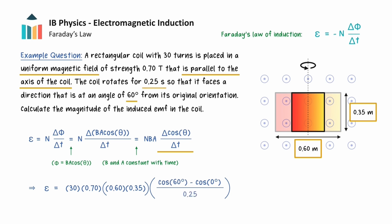So the final value of theta will be 60 degrees, and this happens in a time of 0.25 seconds. Since we are only interested in the magnitude, completing this calculation gives us a value of 8.82 volts for the induced EMF in the coil.